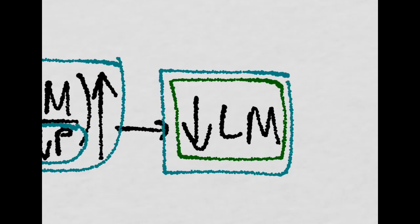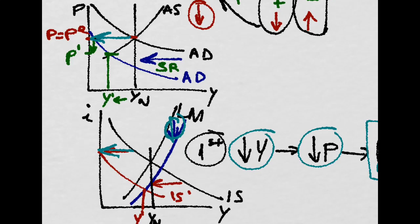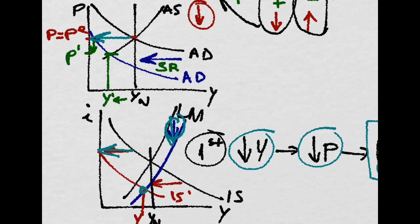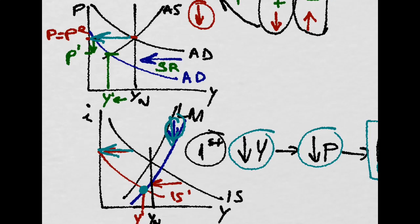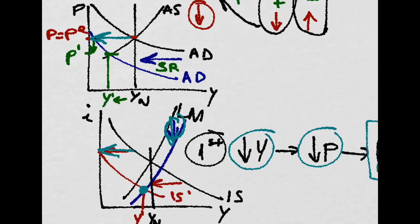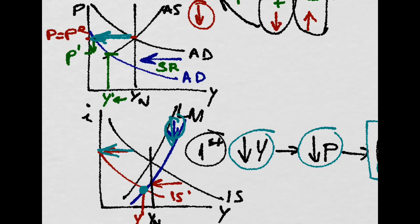So you can see that first we shift the AD to the left and then with the decrease in prices, we're moving along until this new equilibrium point, which is this one.